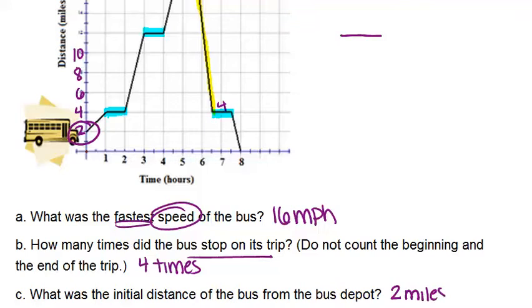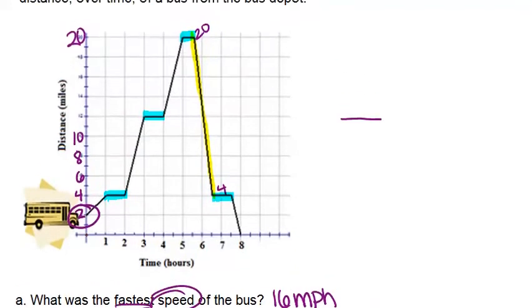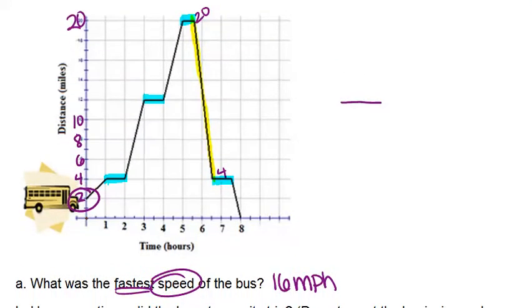And we have one more question. What was the total distance traveled by the bus? All right. So this question can seem harder than it is. Think about it: we started being two miles away. We were driving and stopping and driving and stopping and driving and stopping until we get to 20 miles away. So how far have we traveled so far?